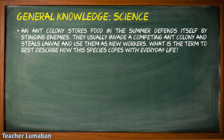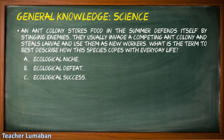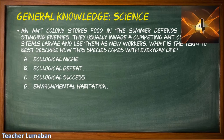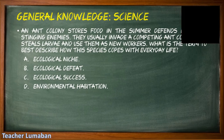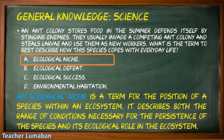An ant colony stores food in the summer, defends itself by stinging enemies, invades competing ant colonies, and steals larvae to use as new workers. What term best describes how this species copes with everyday life? Letter A: ecological niche, Letter B: ecological defeat, Letter C: ecological success, Letter D: environmental habitation. The correct answer is Letter A: ecological niche. An ecological niche is a term for the position of a species within an ecosystem — it describes both the range of conditions necessary for the persistence of the species and its ecological role in the ecosystem.